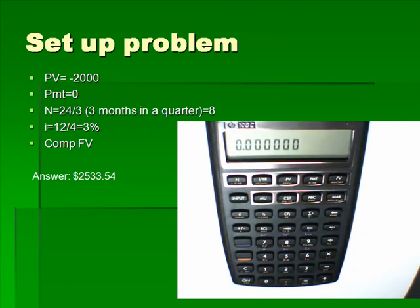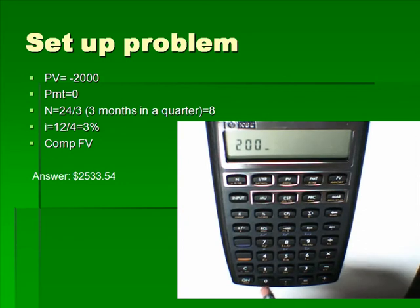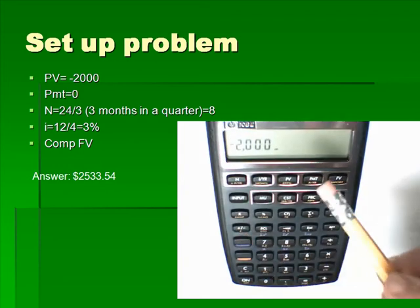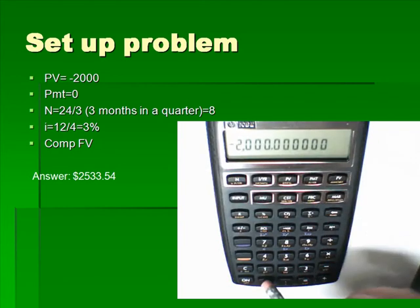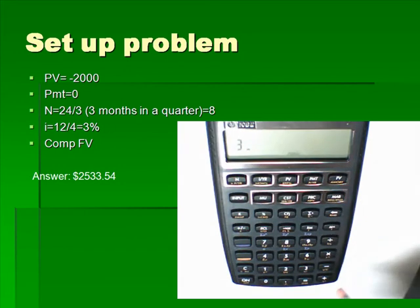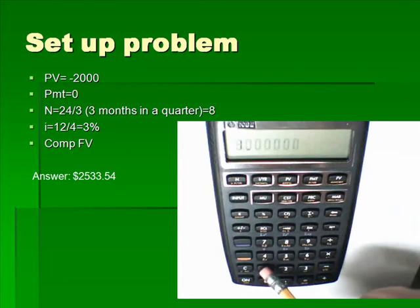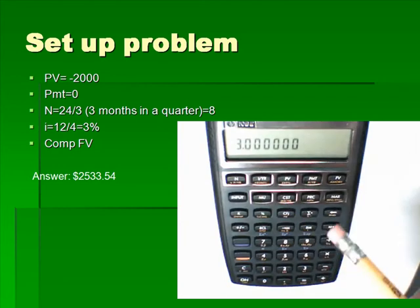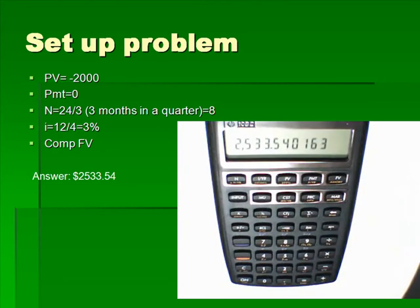I'm going to put aside $2,000. Since I'm putting that money aside, I'm going to use my plus/minus key to make it a negative number — that's what I'm putting aside today. I'm not making any payments. My period of time is 24 months, but I want to go quarterly because I'm compounding quarterly. There are three months in a quarter, so I divide by three — I have eight quarters. That's my N. My quarterly compounding rate is 12% divided by 4, or 3%. That's my interest. The amount I will have in 24 months is $2,533.54.